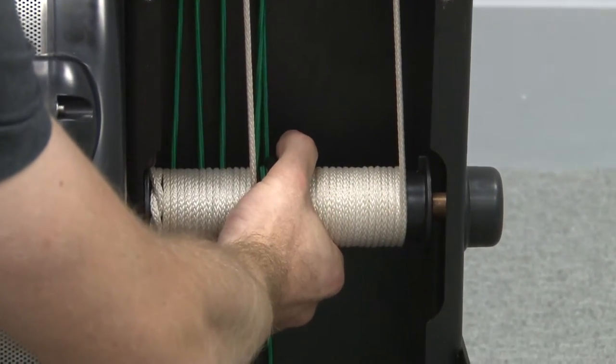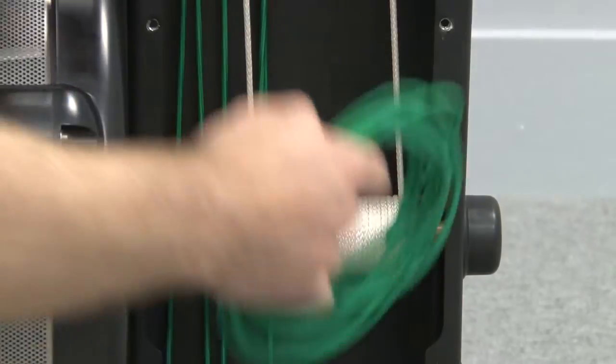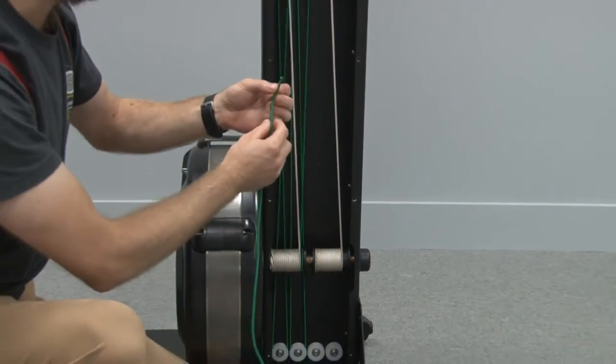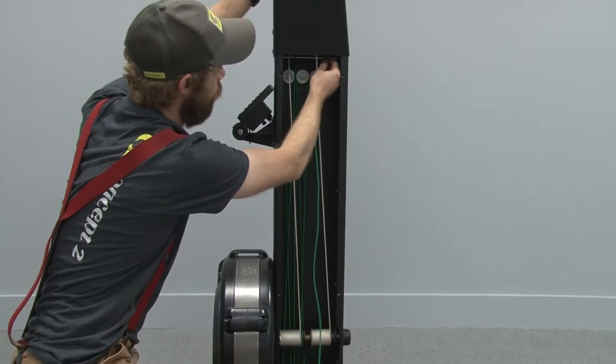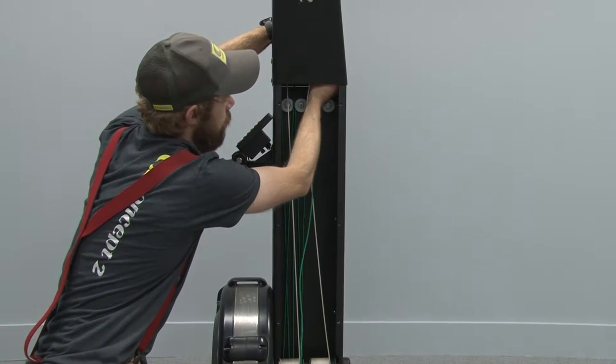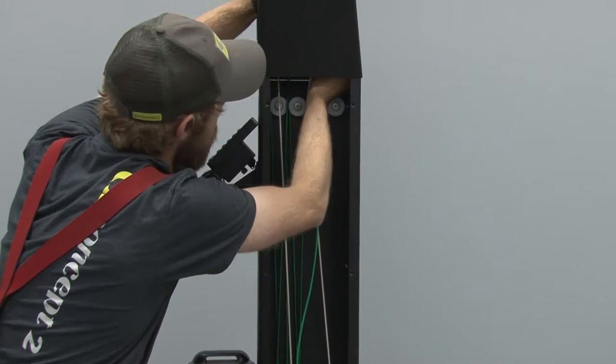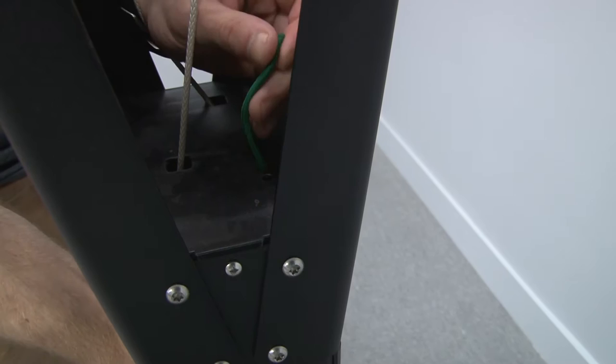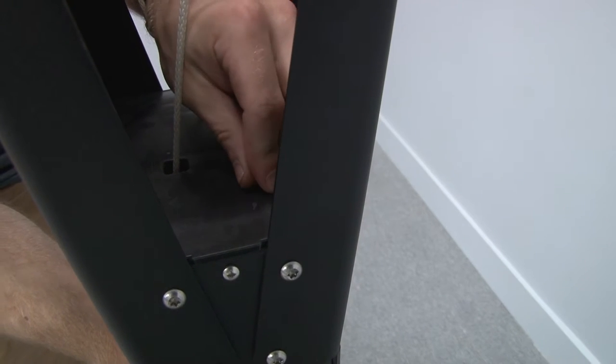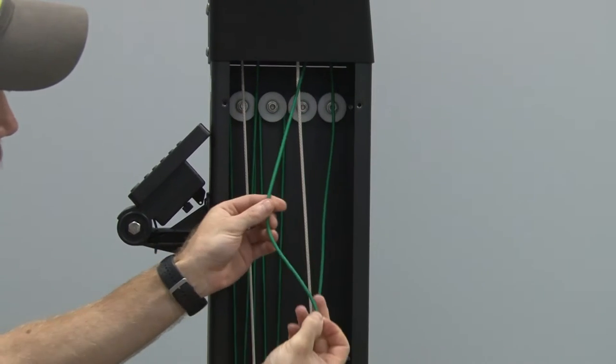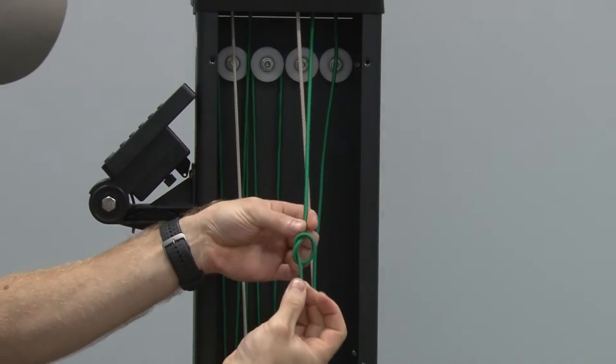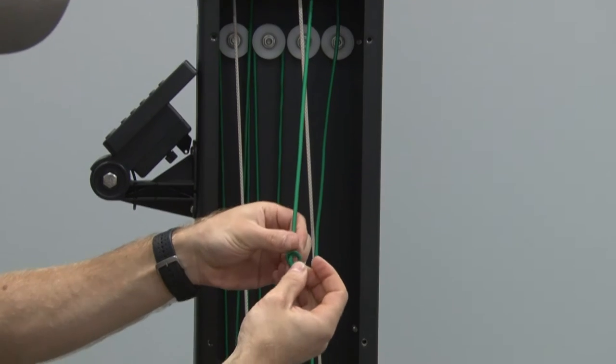Then we take the replacement bungee cord and send one end up through one of the two holes in the top cap here, send it up through the top and then down the other hole. Pull the slack out and tie a single overhand knot.